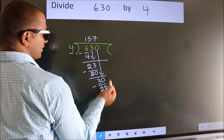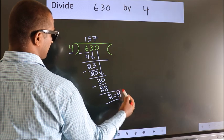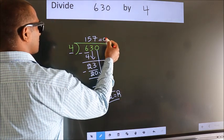No more numbers to bring it down. So, we stop here. This is our remainder. This is our quotient.